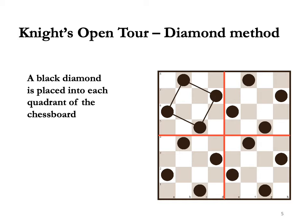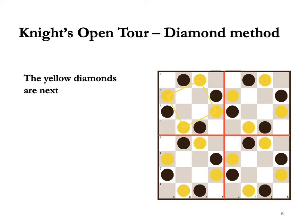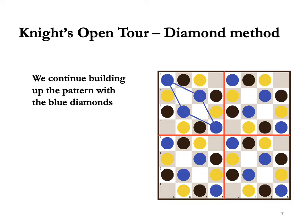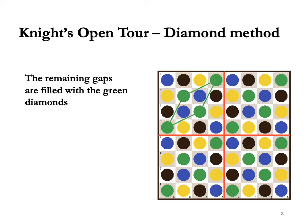We will cover the entire chessboard with these shapes using coloured counters, and with a touch of imagination they might turn into diamonds. First we divide the chessboard into four quadrants and then we place a black diamond in all four quadrants as shown in the diagram. The yellow diamonds are next. Note that every quadrant is filled with diamonds in the same way. We continue building up the pattern with the blue diamonds. The remaining gaps are filled with the green diamonds. We are now ready to invite the knight to the arena.